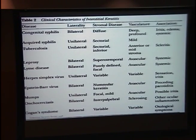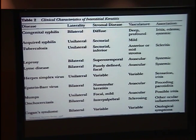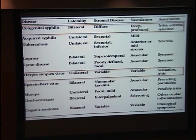Here's a table from a different study that sought to characterize interstitial keratitis, identifying the key presenting characteristics of each cause. Of note, herpes is typically seen unilaterally, often associated with decreased corneal sensation and iritis.